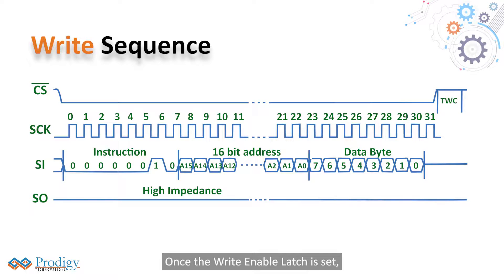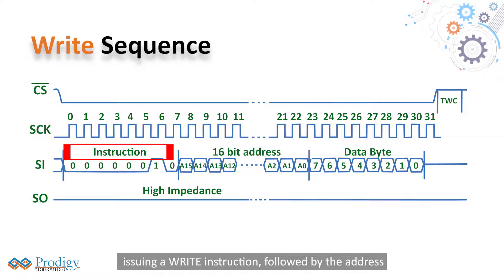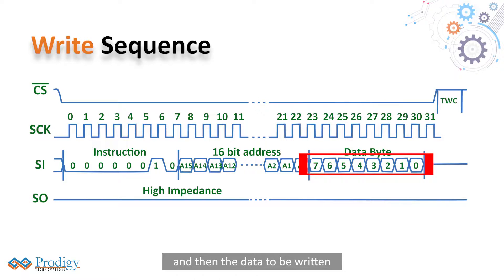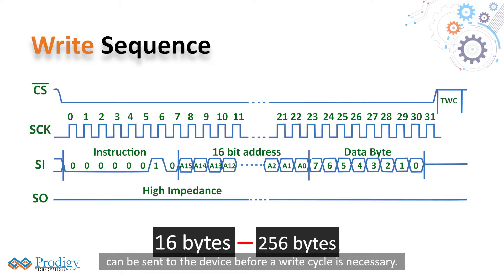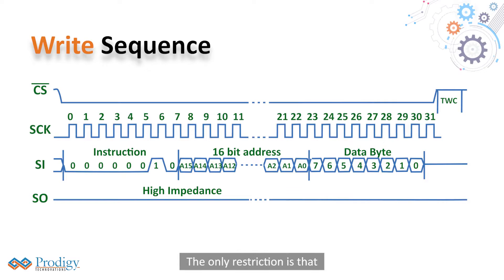Once the write enable latch is set, the user may proceed by setting CS low, issuing a write instruction, followed by the address, and then the data to be written. Depending upon the density, a page of data ranging from 16 bytes to 256 bytes can be sent to the device before a write cycle is necessary. The only restriction is that all of the bytes must reside on the same page.